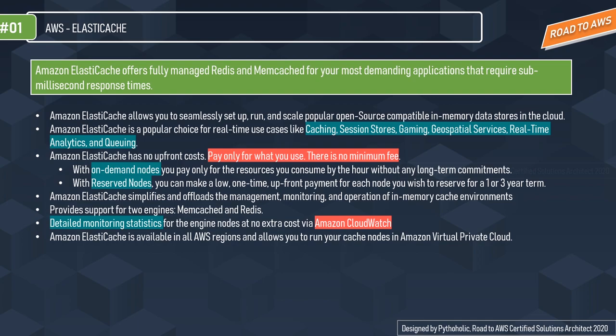There are two famous in-memory data stores: Redis and Memcached. Just like Aurora RDS is for Postgres and MySQL, ElastiCache is for Redis and Memcached. The way we create instances for Postgres and MySQL using Aurora RDS, we can do the same for Redis and Memcached using ElastiCache. Amazon ElastiCache allows you to seamlessly set up, run, and scale these in-memory databases.